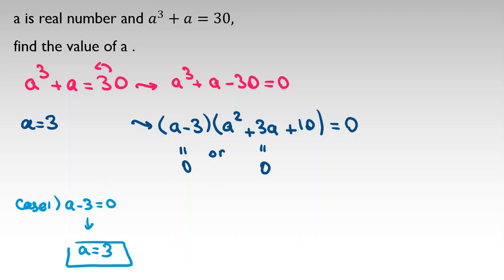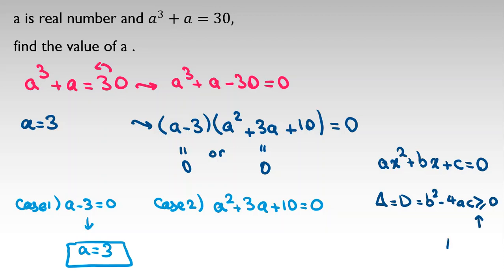If you check, it satisfies the main equation. In case two, we have a squared plus 3a plus 10 equals zero. For solving this quadratic function ax squared plus bx plus c equals zero, you consider delta or discriminant: b squared minus 4ac. It should be at least zero for real solutions.